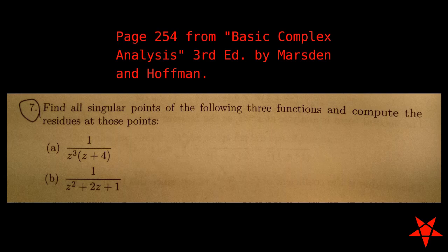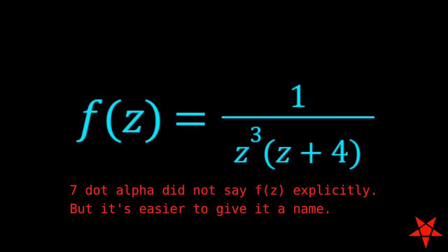Welcome back to Pentagram Prime, everyone. In exercise number 7, part alpha, on page 254 of Marsden and Hoffman, we are asked to find all of the singular points for f of z equal to 1 over the product of z cubed and z plus 4.